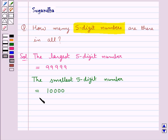And now we have to find the total number of 5-digit numbers. So, number of all 5-digit numbers is equal to the largest 5-digit number which is 99,999 minus the smallest 5-digit number which is 10,000 plus 1.